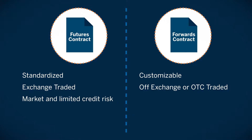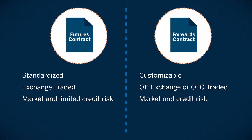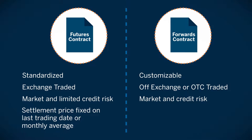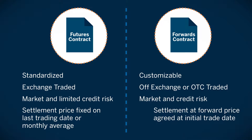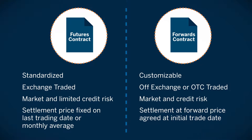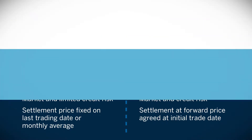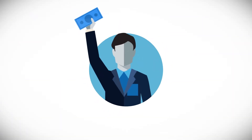Futures carry market risk, but credit risk is limited to the exchange's clearinghouse. Forwards carry both credit and market risk. Futures are settled at the settlement price fixed on the last day of trading, or monthly average settlement price. Forwards are settled at the forward price agreed at the initial trade date.